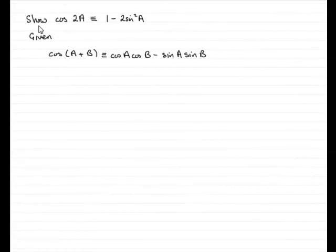In this part of the question, we're asked to show that the cosine of 2A is identical to 1 minus 2 sine squared A. And we're given that the cosine of A plus B is identical to the cosine of A times cosine of B minus sine A sine B.